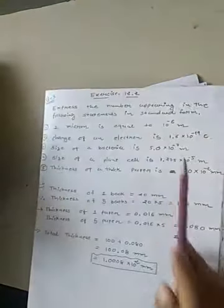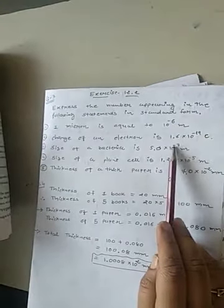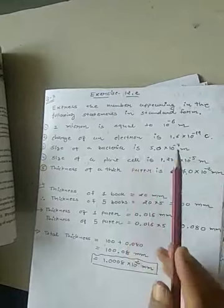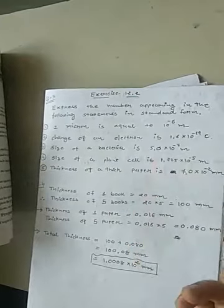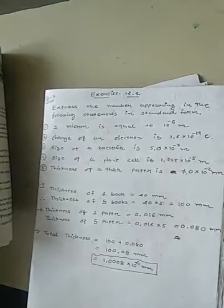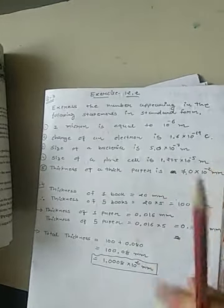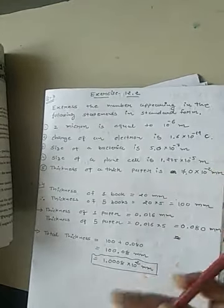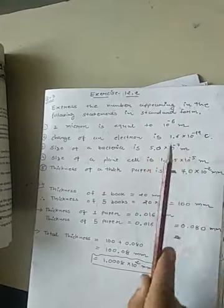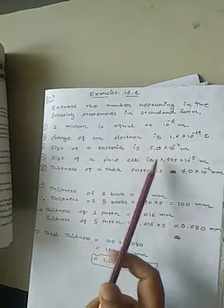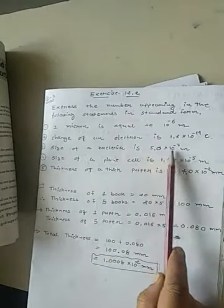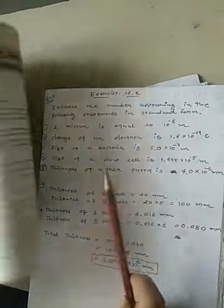7 steps to the right. So, power is 7 and because it is coming to right, it is negative. You remember, if point is shifting to the right, power will always be negative. In short, power will decrease. You can remember like this also. If point is shifting towards the right, power will decrease. And if it will shift to the left, power will increase. So, 5.0 into 10 raised to minus 7.